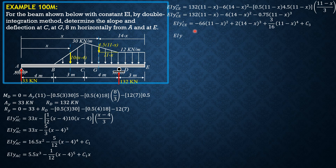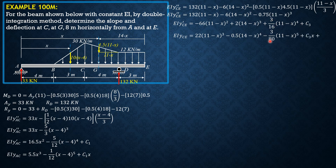Integrating again: EI Y_CE equals 22(11 minus X)³ minus 0.5(14 minus X)⁴ minus (3/80)(11 minus X)⁵ plus C₃X plus C₄. Applying the boundary condition that when X equals 11, Y_CE equals 0 (deflection at D is zero): 0 equals 0 minus 0.5(3)⁴ plus 11C₃ plus C₄. So 11C₃ plus C₄ equals 40.5. Call that equation 1.